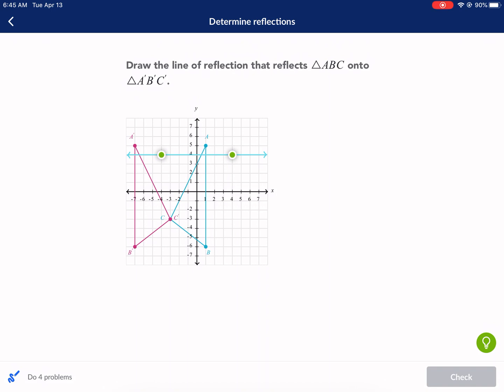Draw the line of reflection that reflects triangle ABC onto A'B'C'. So as you can see here, it's the blue one. That's the original shape. This one right here. And then it reflects onto the red one right here.